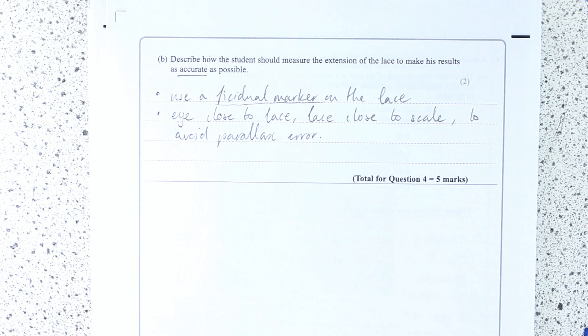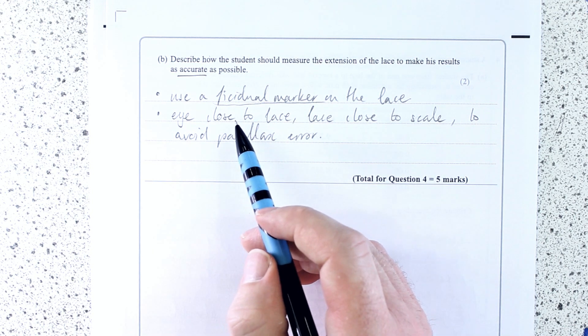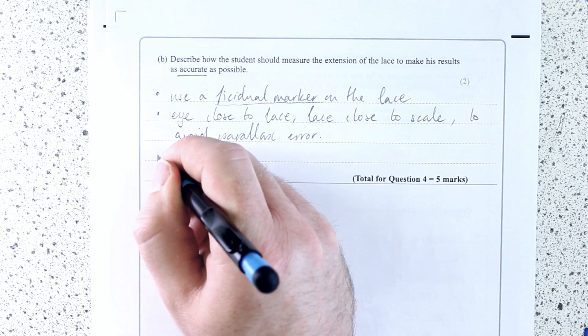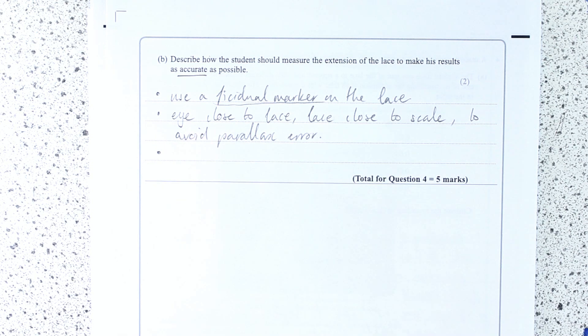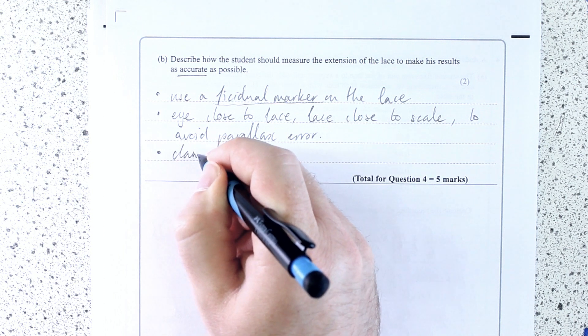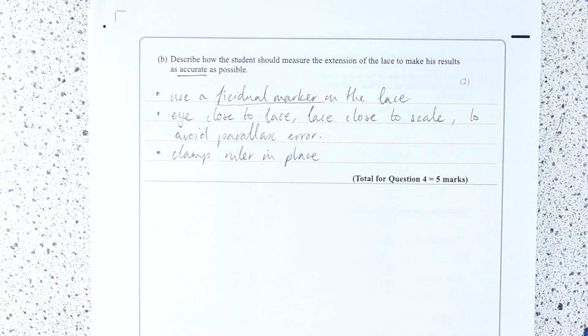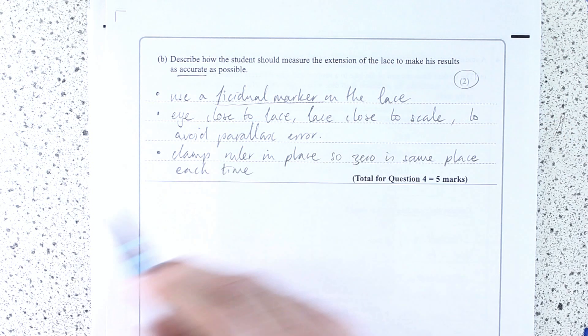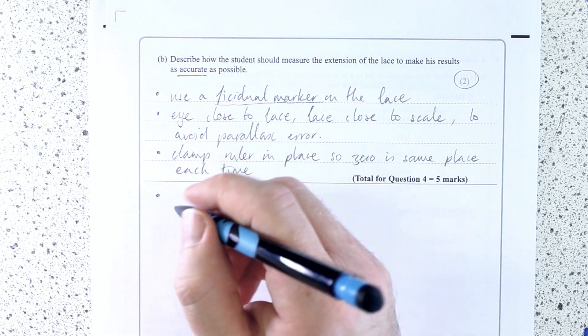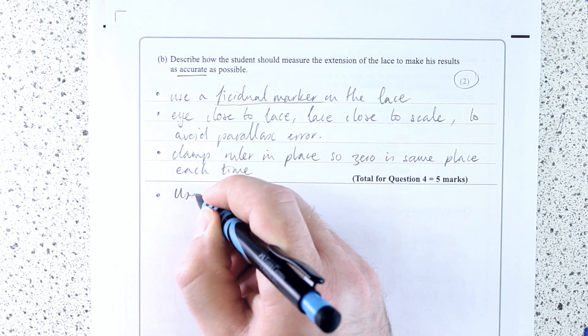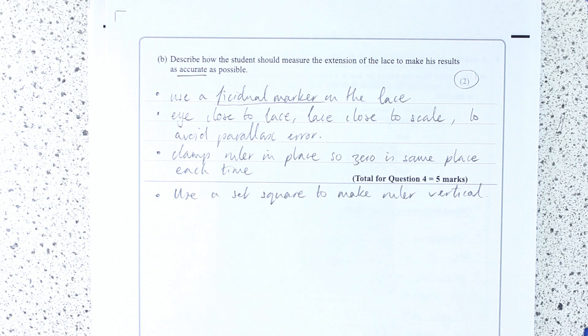But what I really like to see when we're doing Hooke's Law or extension practicals, Young Modulus, is that you actually clamp the ruler in place. So, clamp ruler in place, or fix it in place, so that you're sure that zero hasn't moved. You only need two of these, but there are four possible answers that they've given. And the last one is to make the ruler vertical with a set square. I hope that helps.